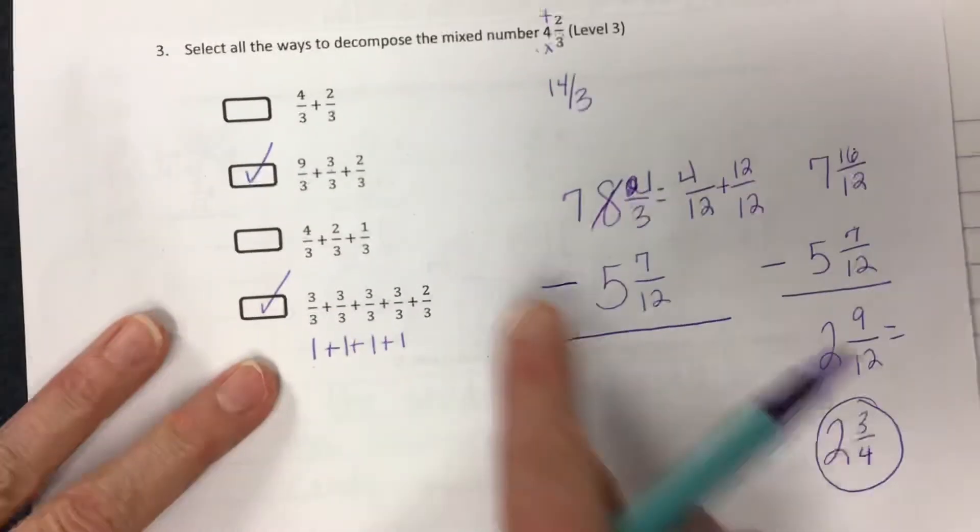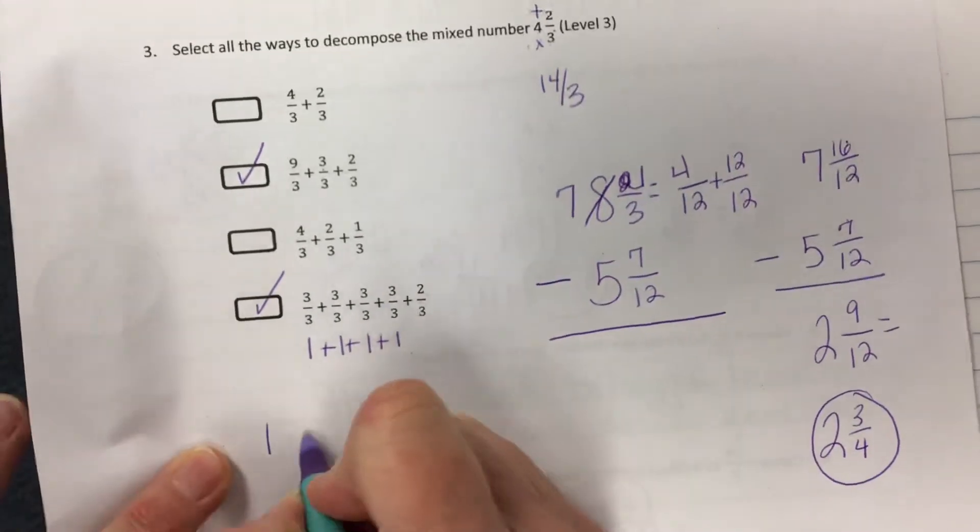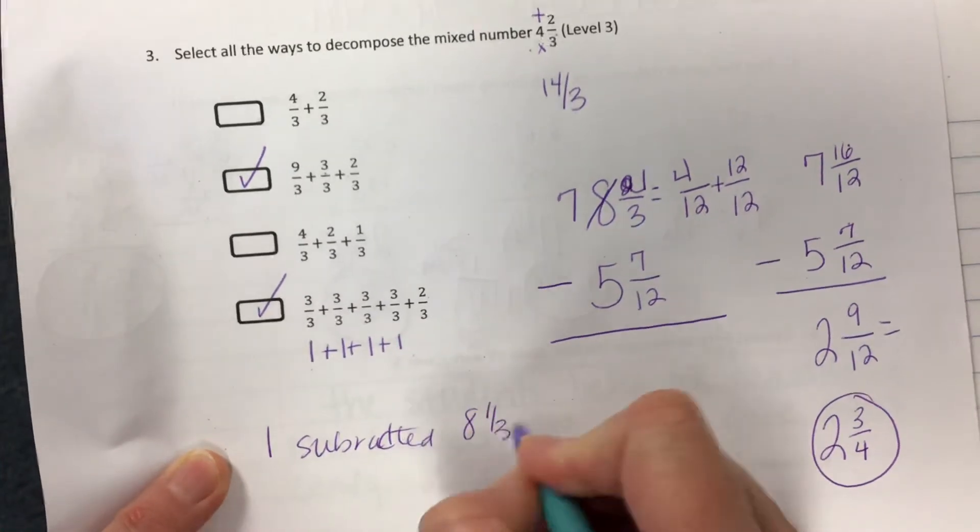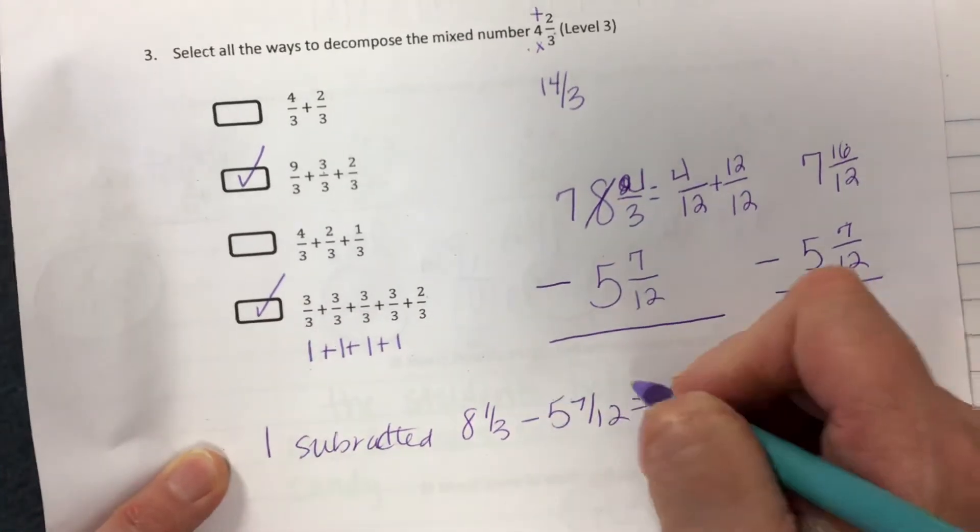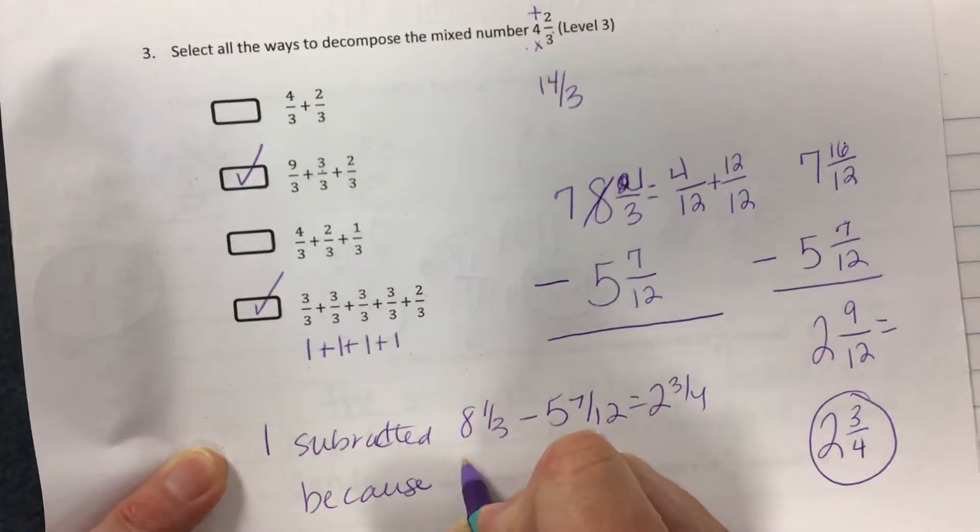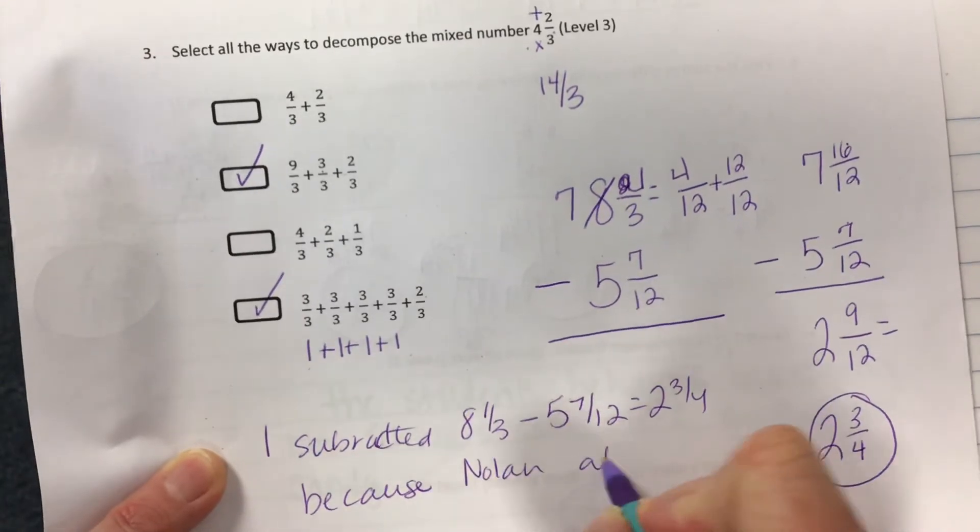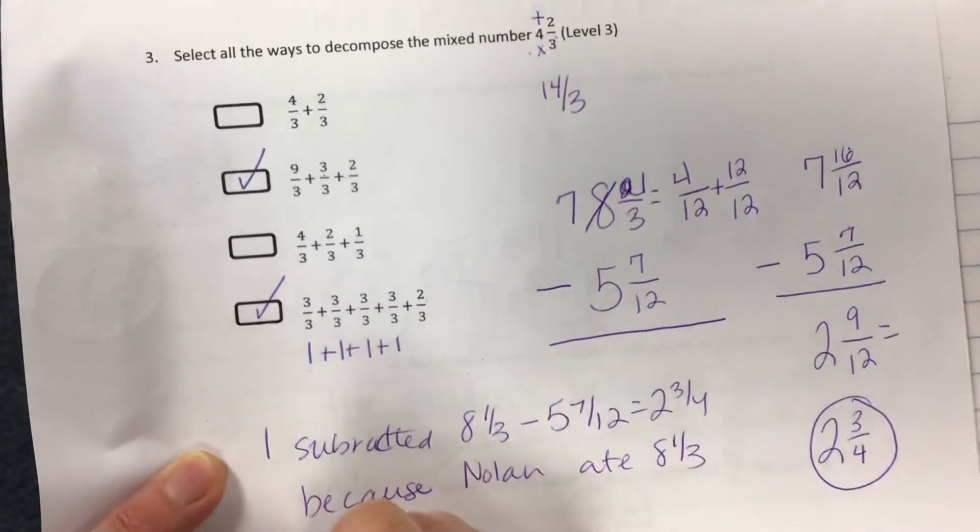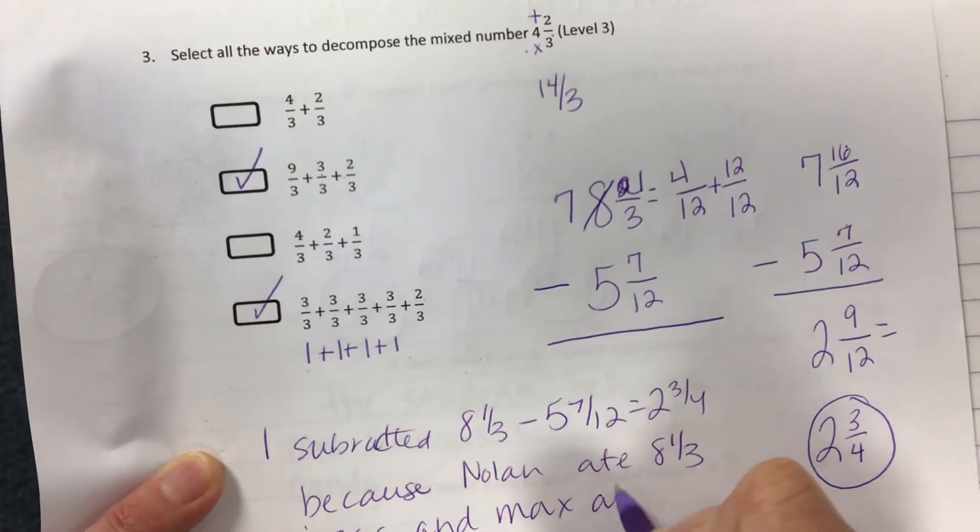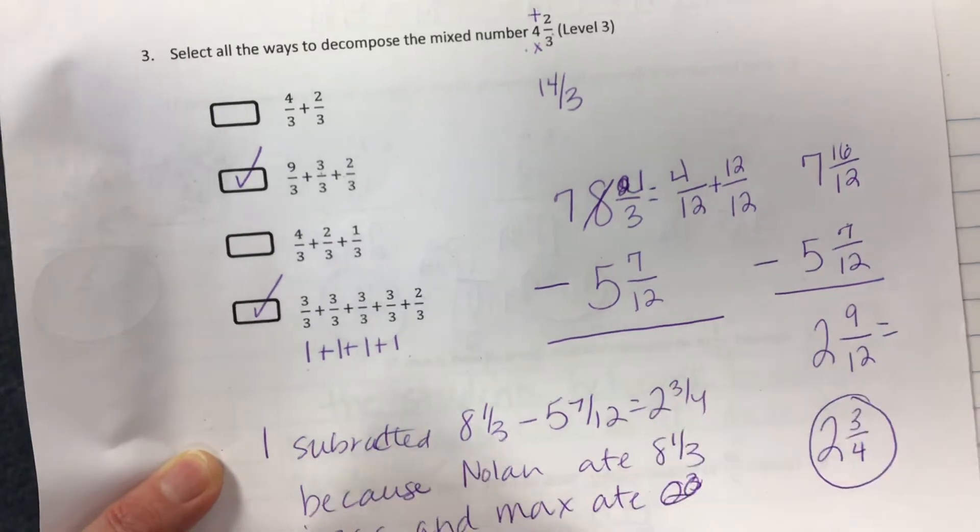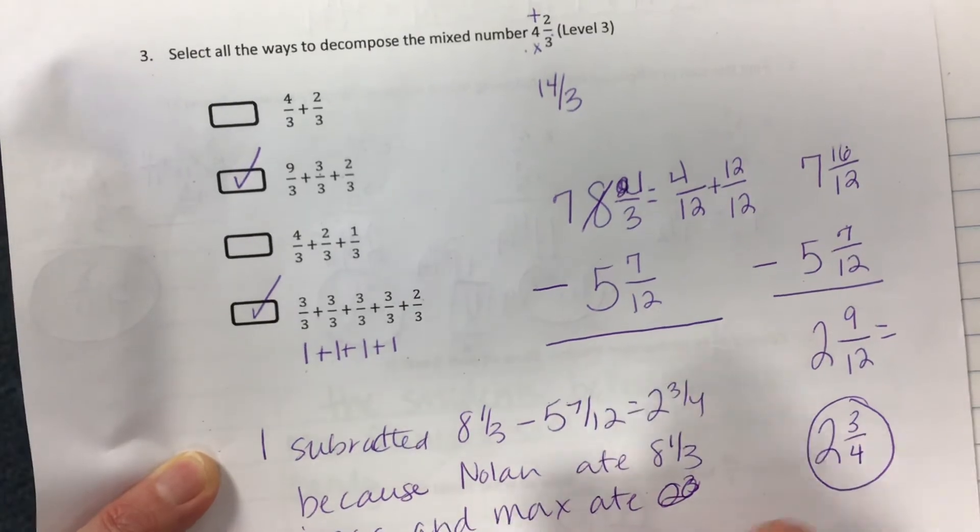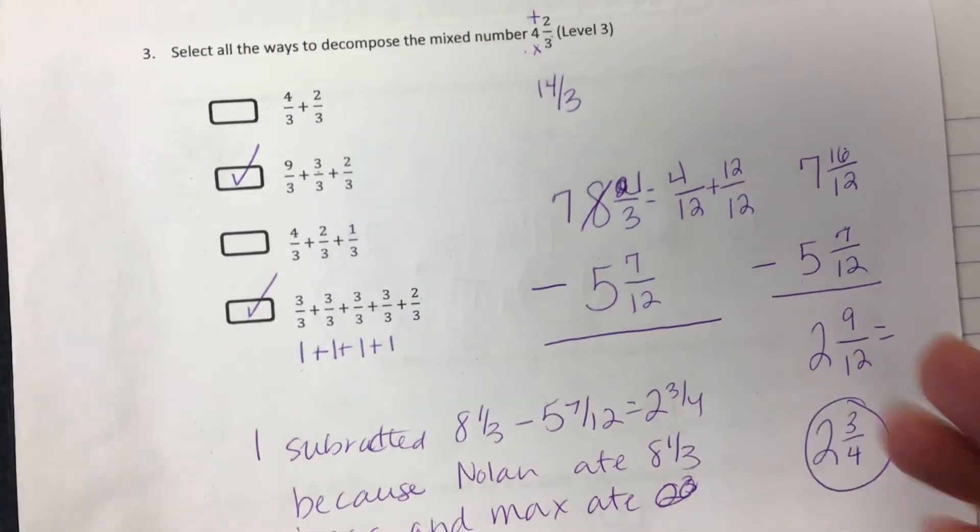You could literally just say I subtracted eight and one-third minus five and seven-twelfths equals two and three-fourths because Nolan ate eight and one-third pizzas and Max ate five and seven-twelfths pizzas and I needed to know how much more Nolan ate.